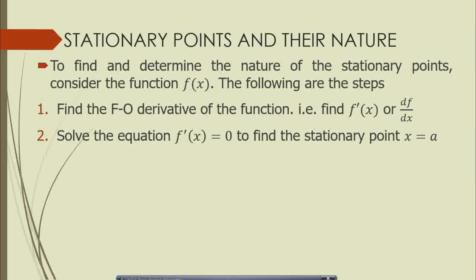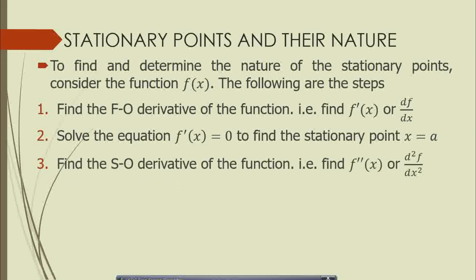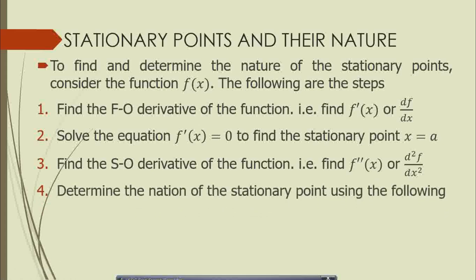Once you find your first order condition, you need to get the second order derivative of the function, which means differentiating f of x twice, or differentiating the first derivative. This gives you f double prime of x, the second order derivative. From here, you apply the second order condition to determine the nature of the stationary point — whether it is a maximum, minimum, or inflection point.